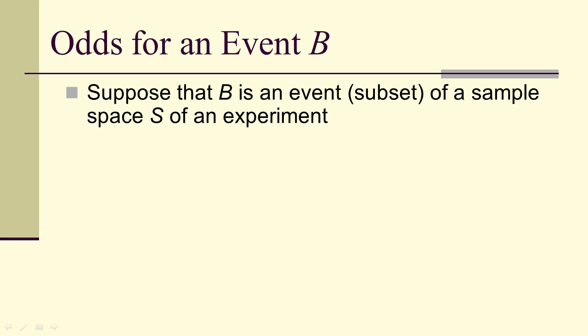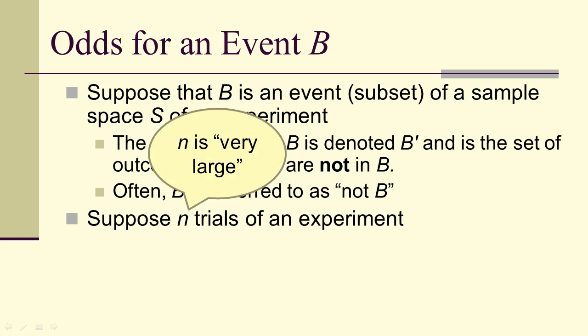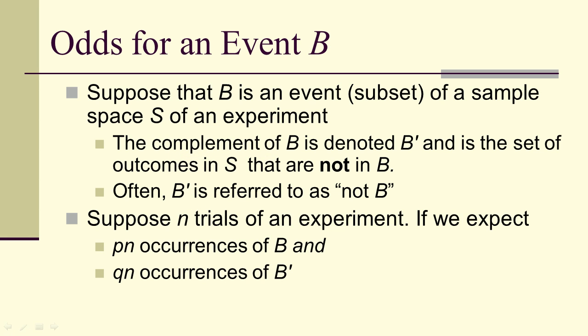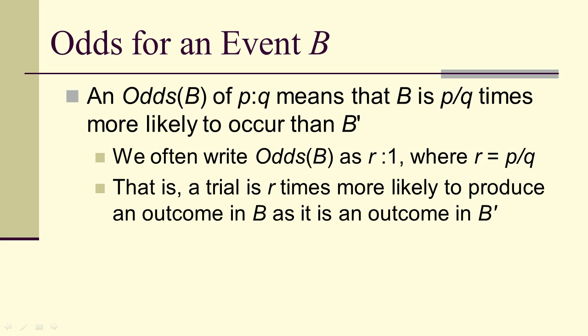Now what do we mean by odds? So suppose B is an event of a sample space. Then the complement is B prime. It's the set of outcomes in S that are not in the set of outcomes B. And B prime, sometimes I would say, is not B. We have N trials of an experiment, and N here, of course, is very large. Then if we expect PN occurrences of B and QN occurrences of B prime, then we say that the odds of B occurring is P to Q. Now what does it mean? It means the odds of P to Q means that B is P over Q times more likely to occur than B prime. And so a lot of times we'll write the odds of B is R colon 1, where R is this P over Q. And that means a trial is R times more likely to produce an outcome in B than it is to produce an outcome in B prime.